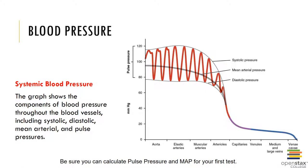In general, blood flow is directly proportional to blood pressure, so increased pressure results in increased flow, and is inversely proportional to peripheral resistance, so increased resistance results in decreased flow. Changes in blood pressure occur as blood flows through the cardiovascular system. The heart generates a pressure of around 100 millimeters of mercury as it pumps blood into the aorta, which has a cross-sectional area of roughly 4.5 centimeters squared.